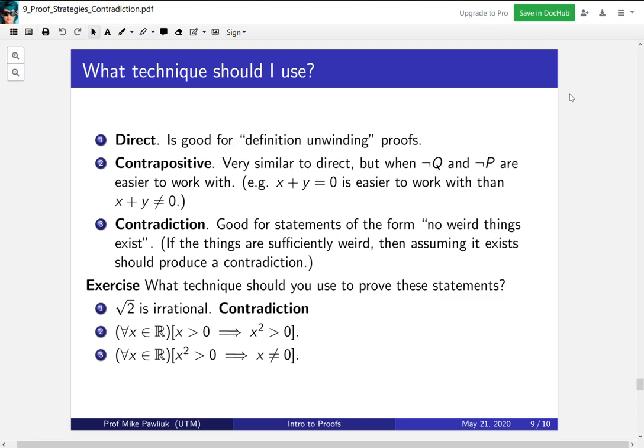For the second one, this is an example of where a direct proof would be perfectly well suited. Assuming that x is positive is a natural assumption, and from that you can conclude x squared is greater than zero by using inequality stuff.